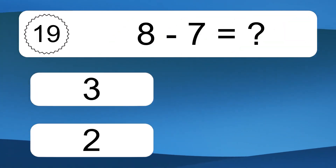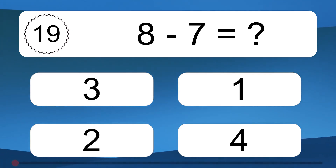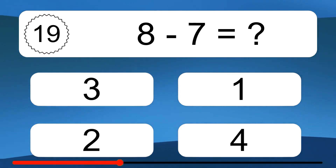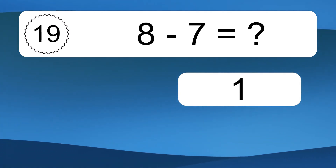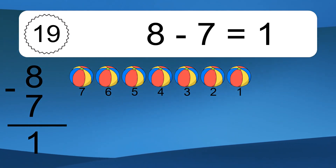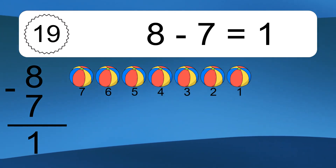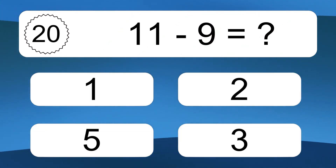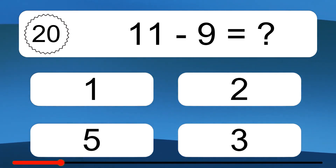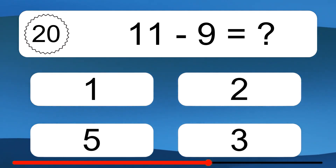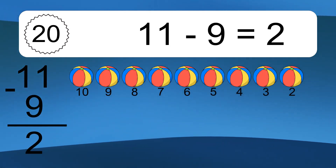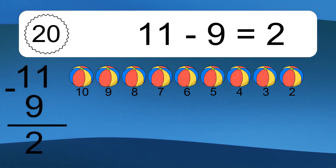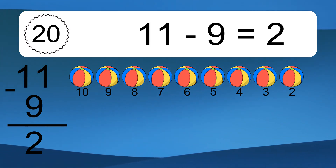8 minus 7 equals what? 8 minus 7 equals 1. Let's count it: 7, 6, 5, 4, 3, 2, 1. 11 minus 9 equals what? 11 minus 9 equals 2. Let's count it: 10, 9, 8, 7, 6, 5, 4, 3, 2.